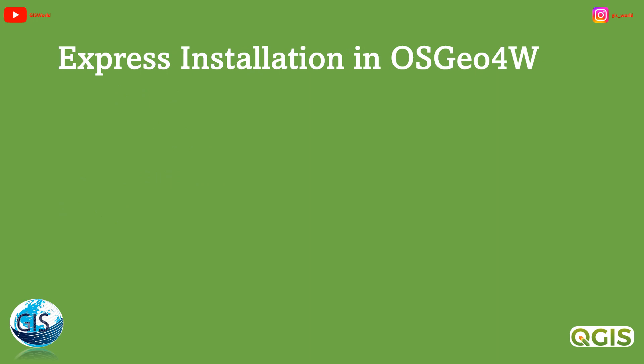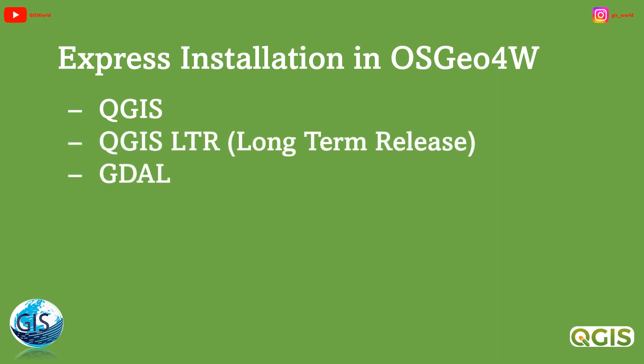When you open the OSGeo4W package, you will see two types of installation: express installation and advanced installation. In the express installation, we have four choices: QGIS, QGIS LTR, GDAL, and GRASS GIS. QGIS is the latest version which has all the libraries already published. I really recommend this if you are a researcher, student, or someone who wants to know the latest libraries of QGIS.